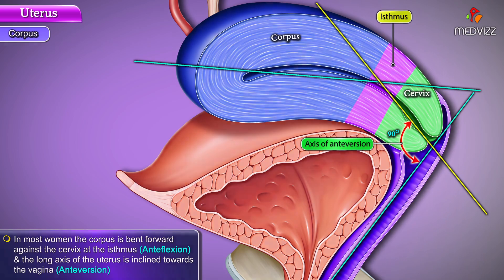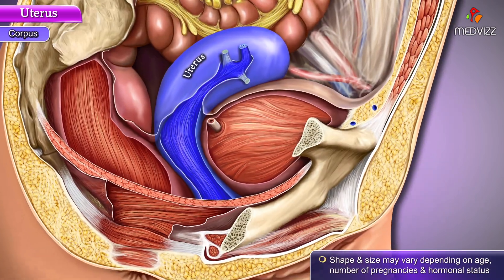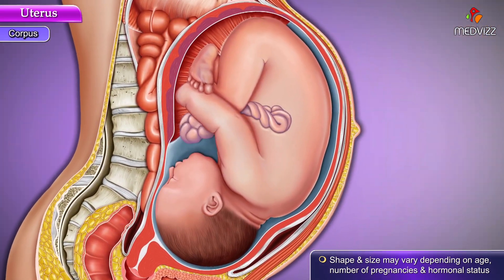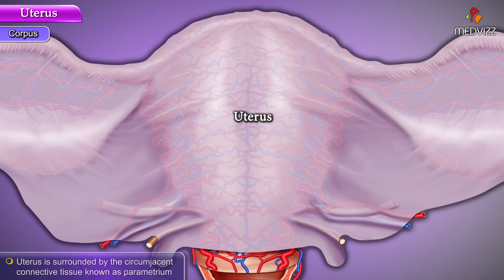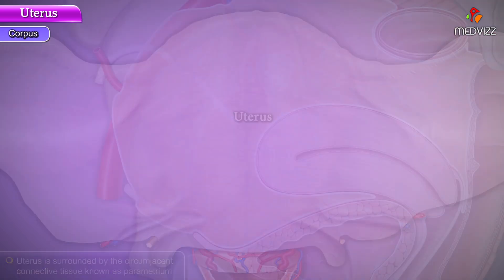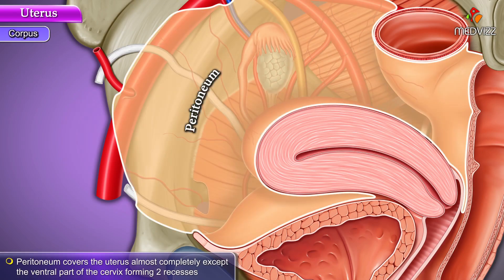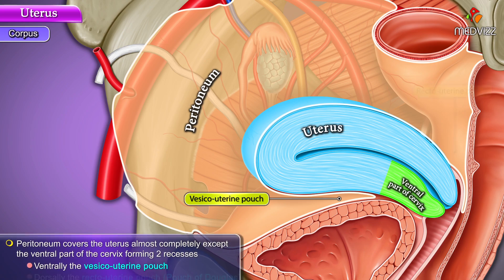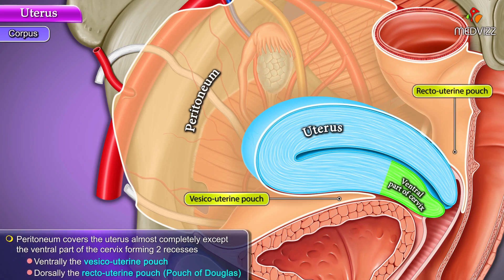The shape and size may vary depending on age, number of pregnancies, and hormonal status. The uterus is surrounded by circumjacent connective tissue known as parametrium. The peritoneum covers the uterus almost completely except the ventral part of the cervix, forming two recesses: ventrally the vesicouterine pouch, and dorsally the rectouterine pouch, also known as the pouch of Douglas.